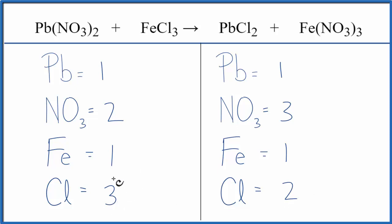I think what I'll do is multiply this by two, and that'll give me an even number. So three times two would give me six. So I'll put a two in front of the iron three chloride. Three times two gives me six. One times two gives me two irons, and that's okay.